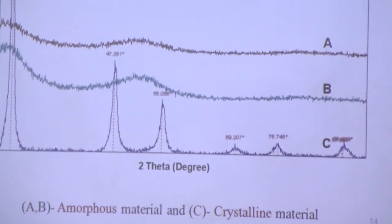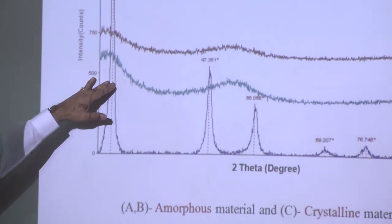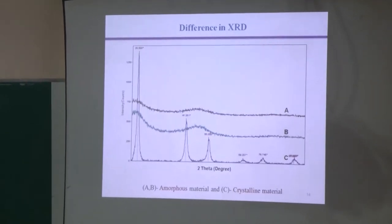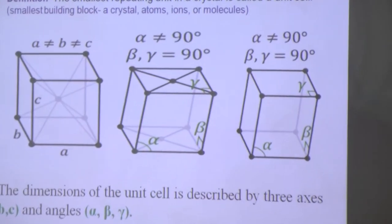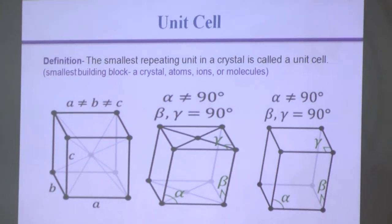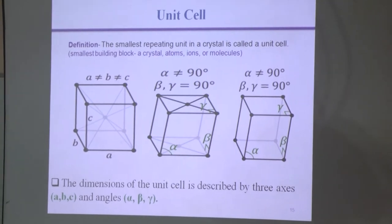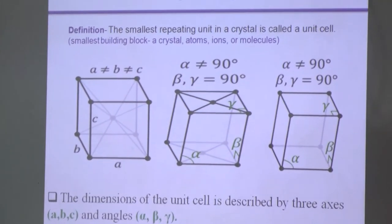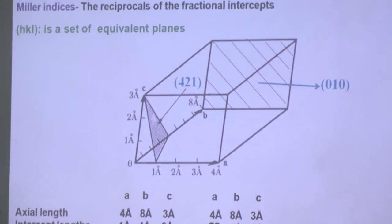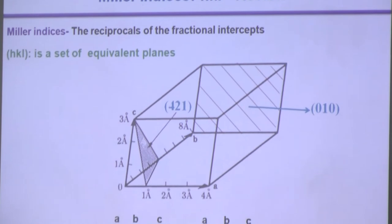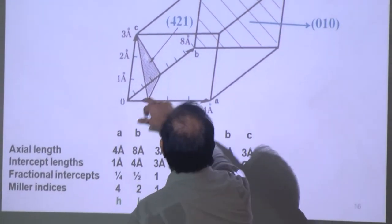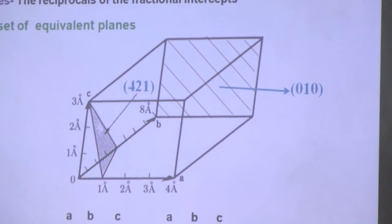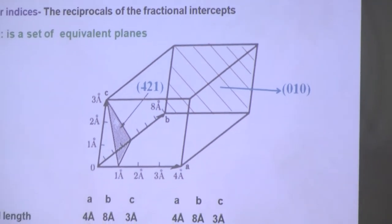When you have amorphous material you get a plain line, and when you have crystalline material you get diffraction patterns at various angles — this is a typical characteristic of that particular material. Diffraction arises because unit cells of various sizes and shapes have axes a, b, c and angles alpha, beta, gamma. When X-rays interact with matter they interact with various planes — such as the 1,0,0 plane or the 0,1,0 plane — and that is why we get the XRD pattern.